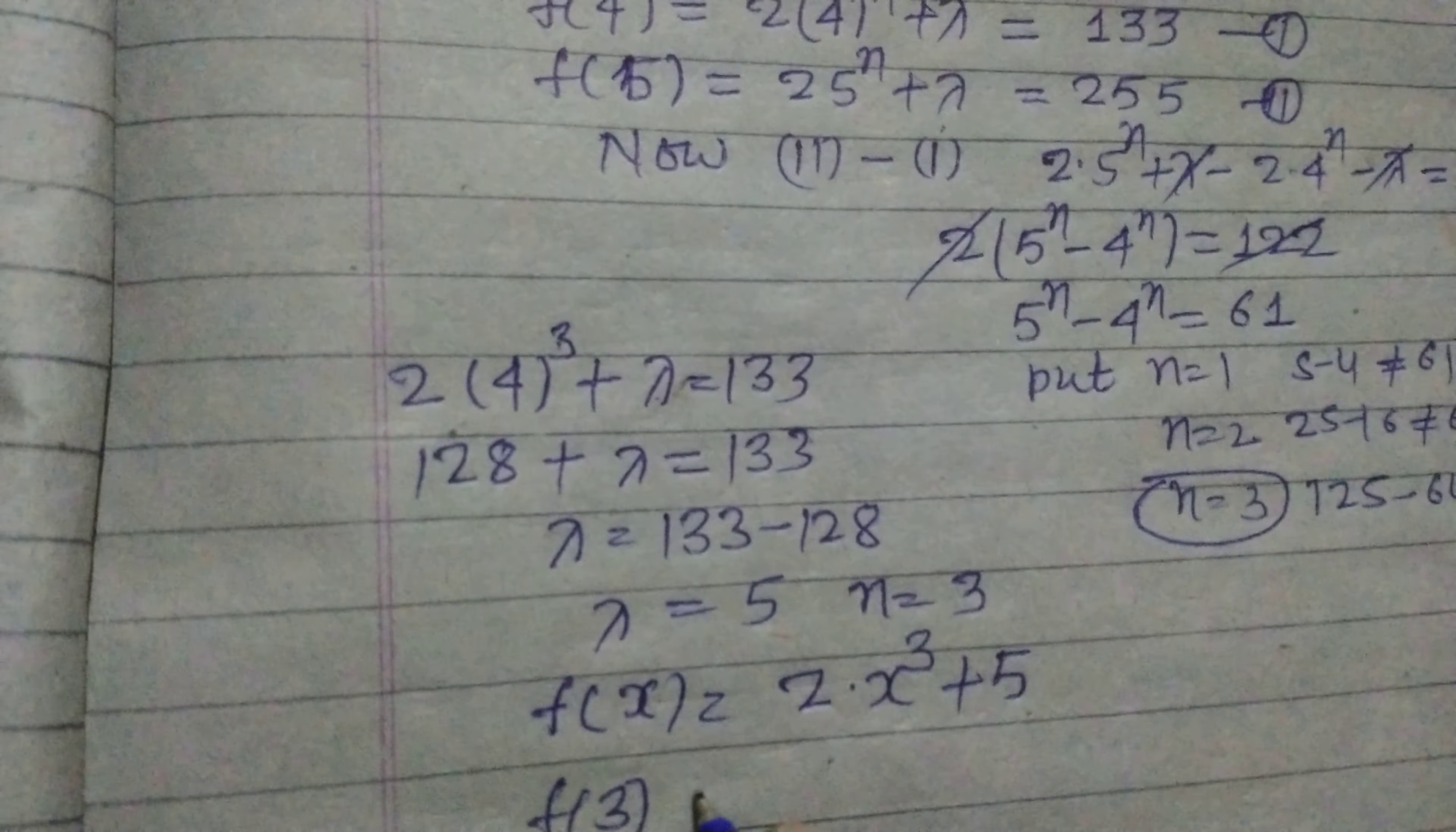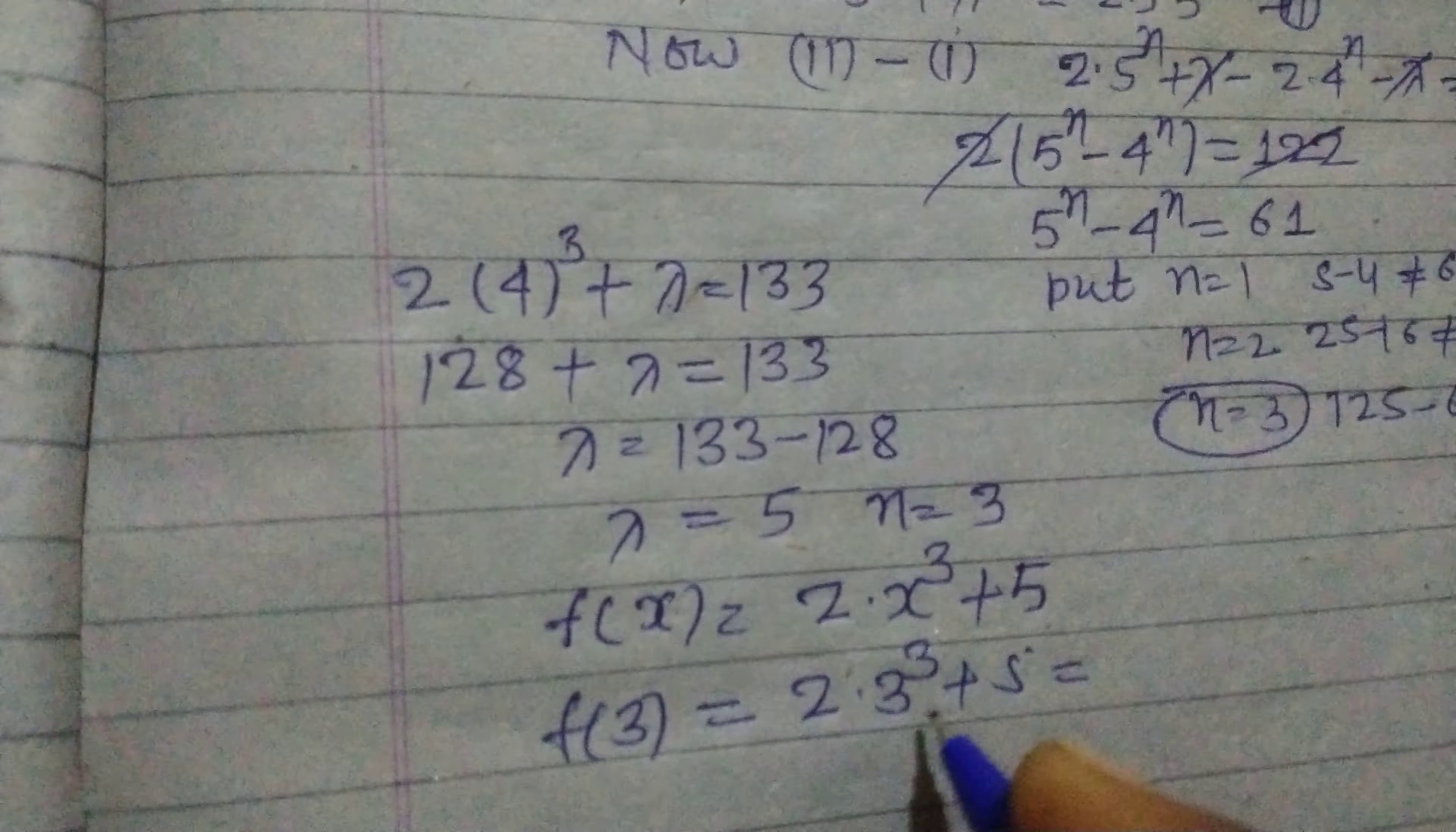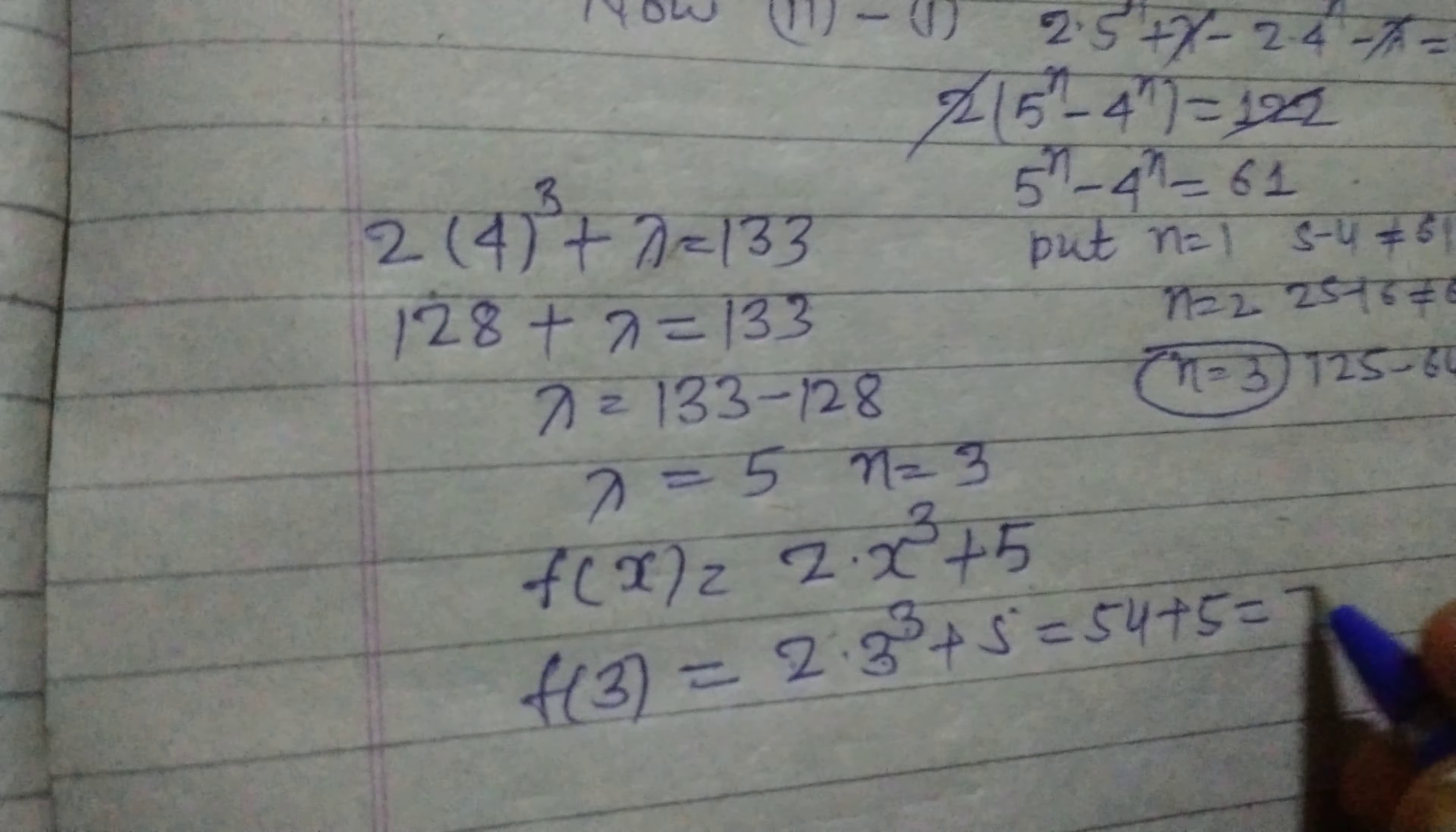So this is 27, 27 × 2 = 54 + 5. So this is 59.